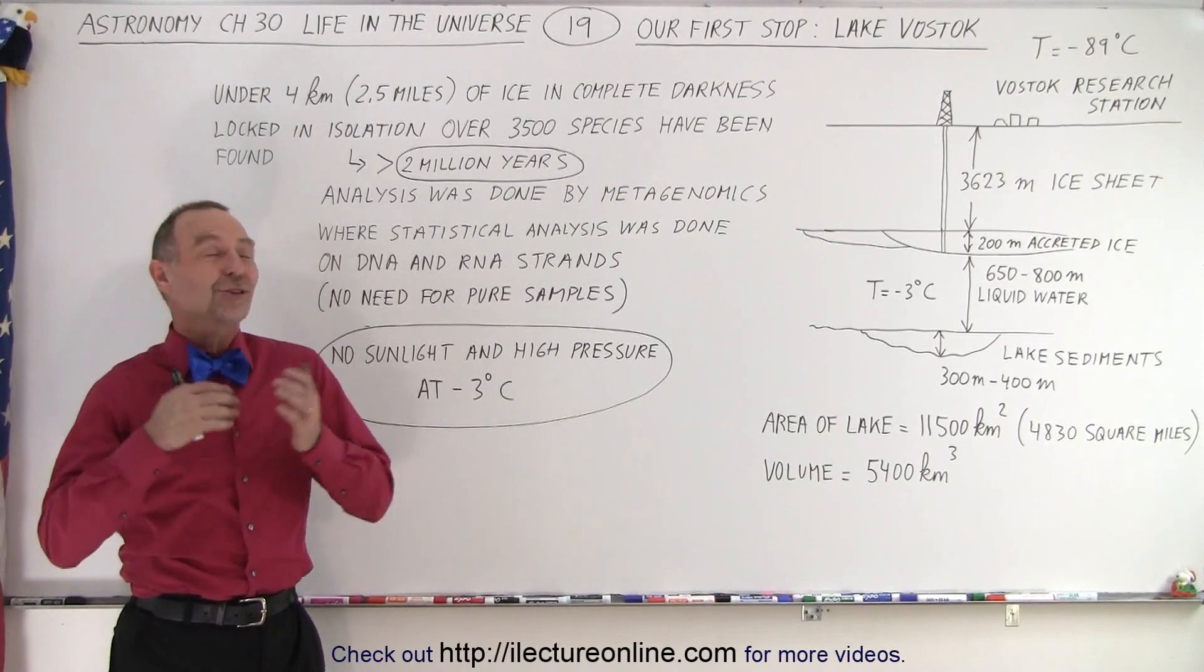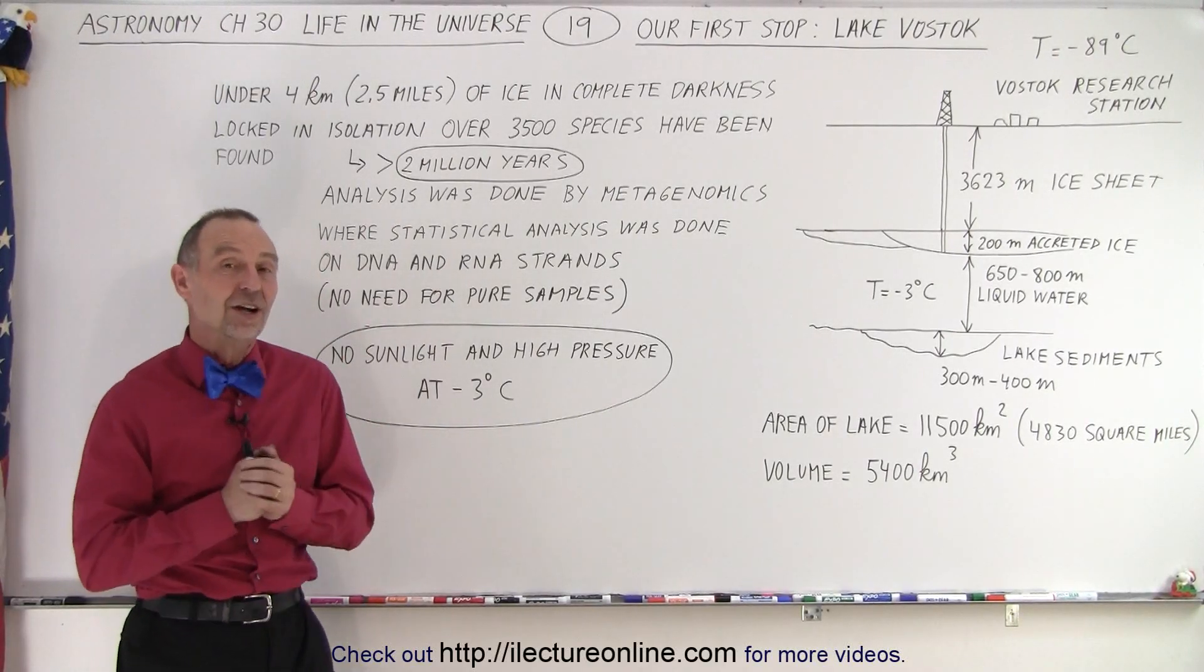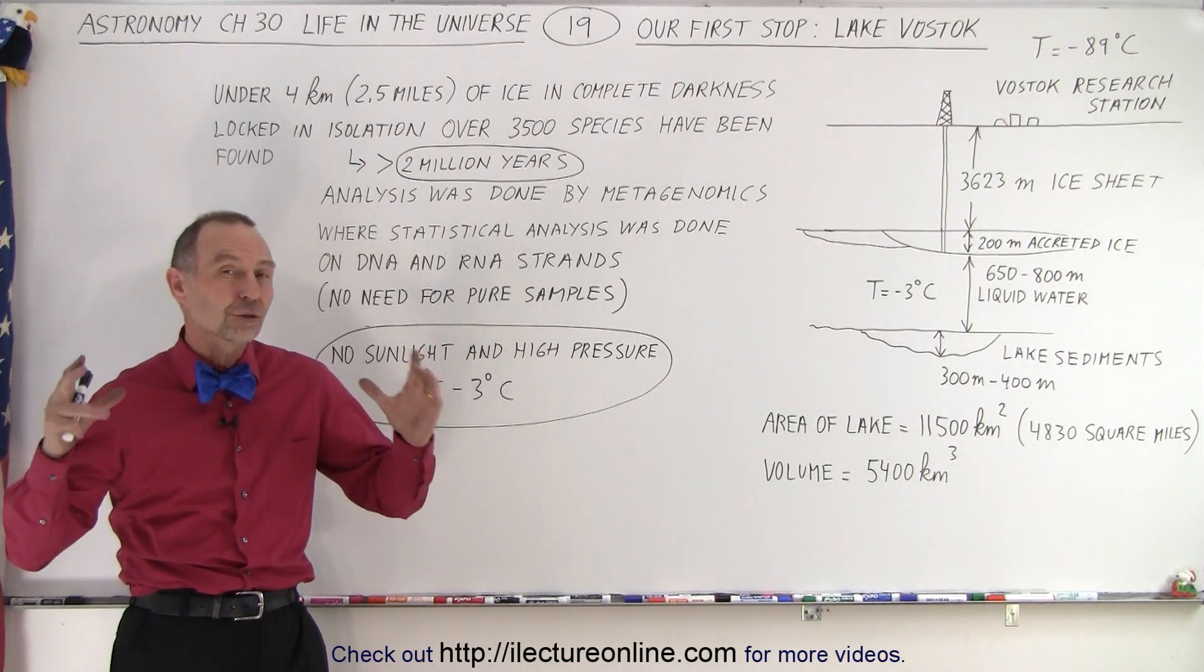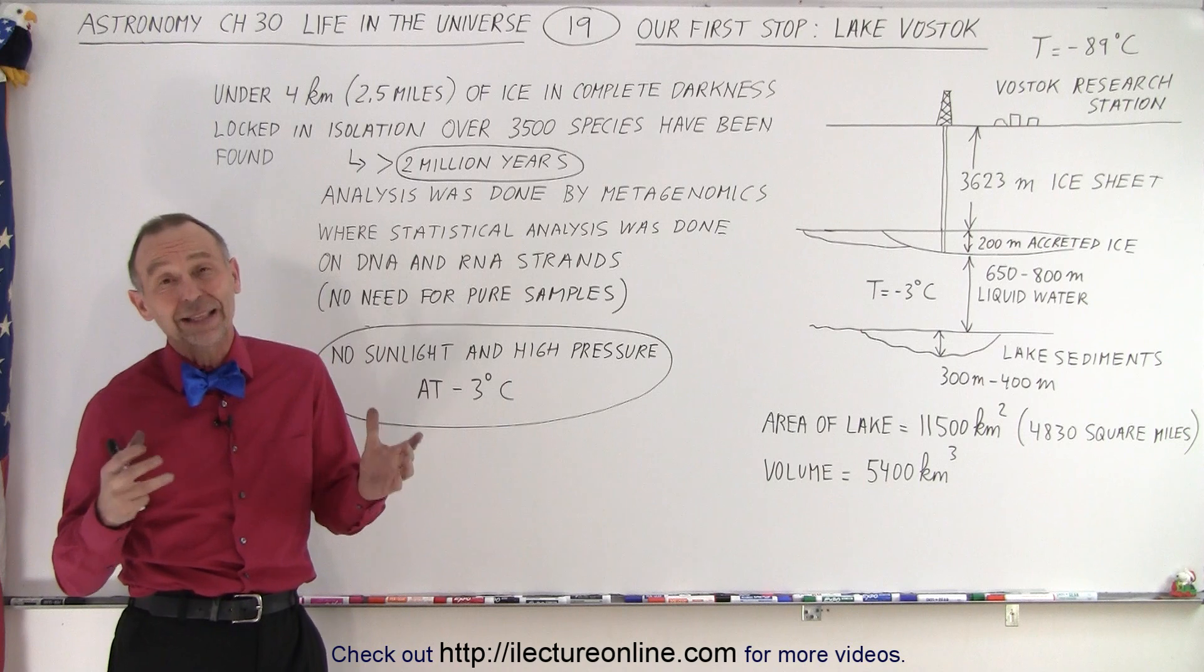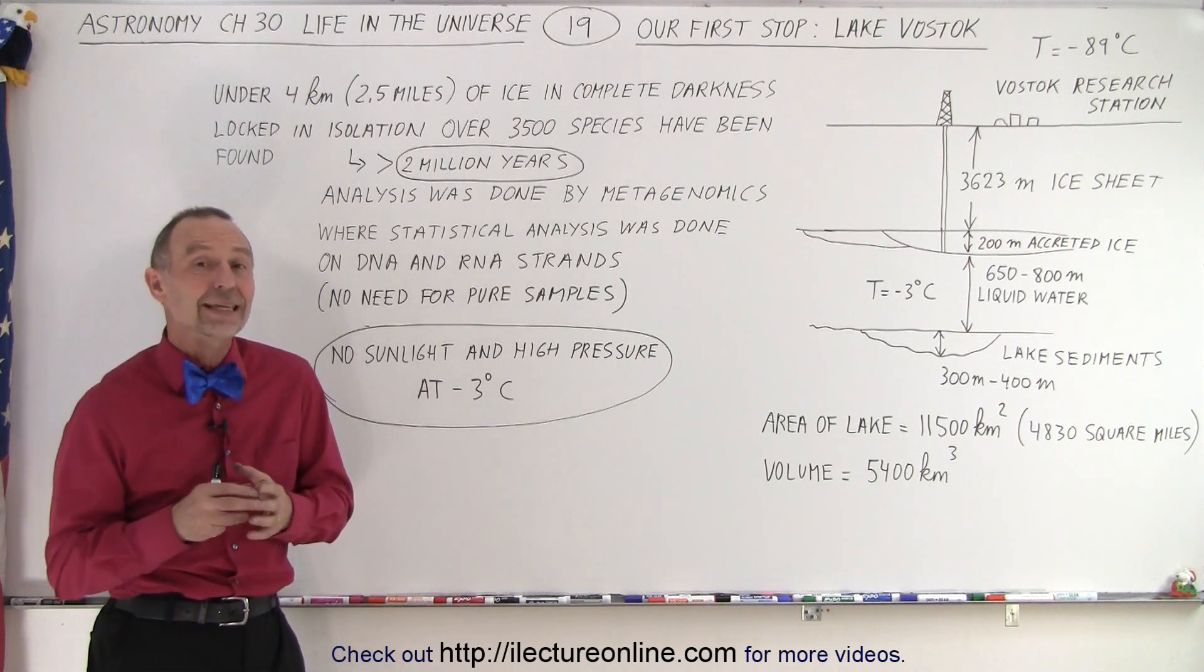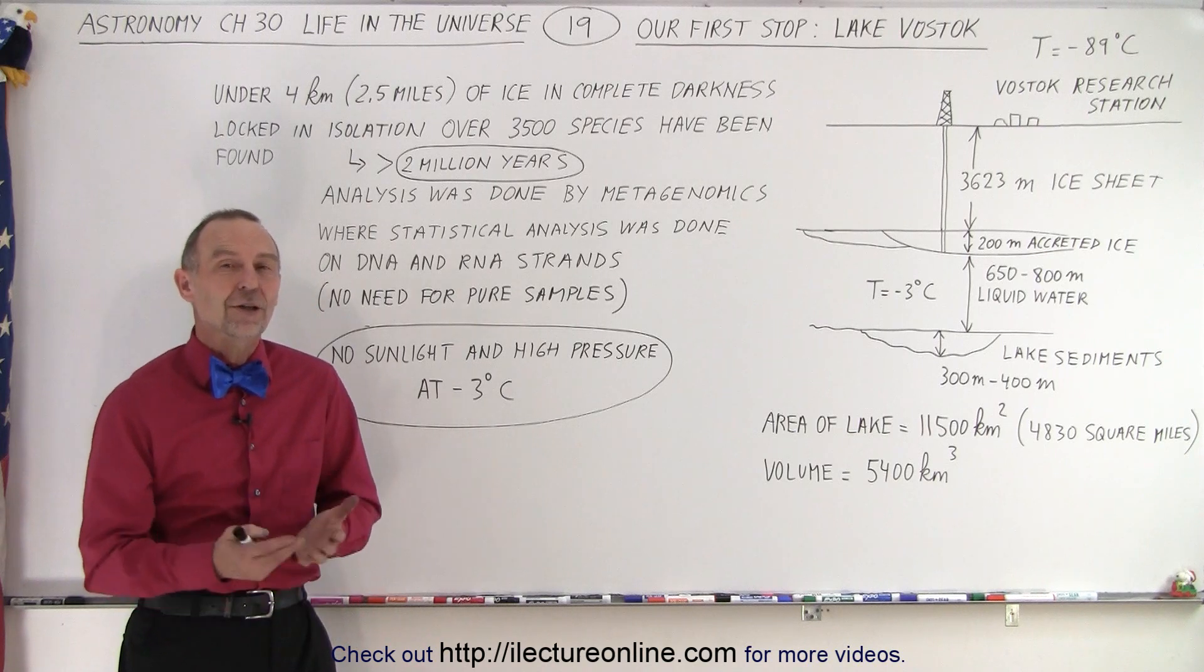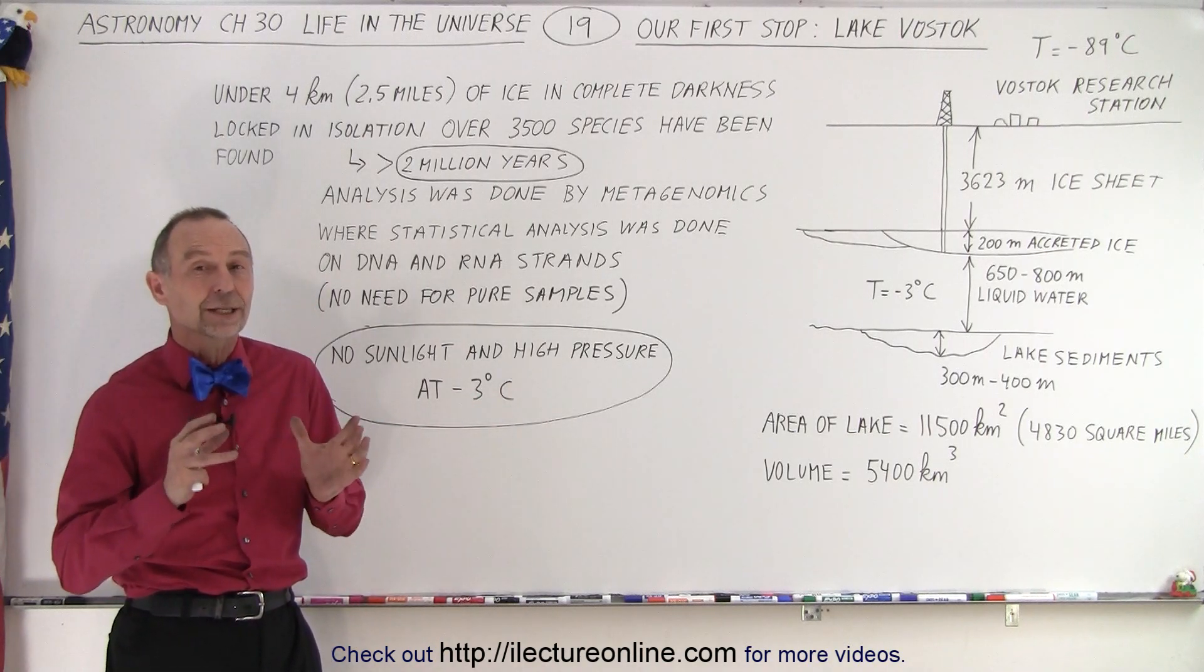Welcome to ElectronLine. Our first stop is Lake Vostok. Where do we find Lake Vostok? Well, it's a large underground lake, and when we say underground, it's basically an under-ice lake at the very tip of the earth in the southern hemisphere, underneath the large ice sheet that covers the Antarctic.